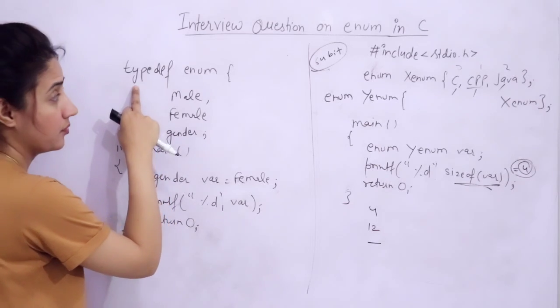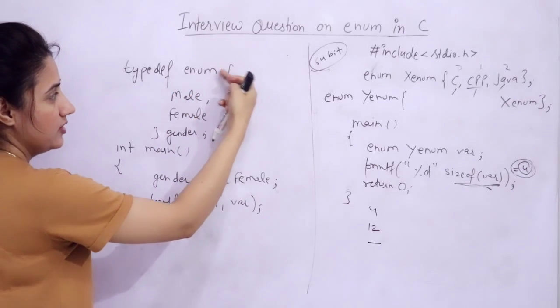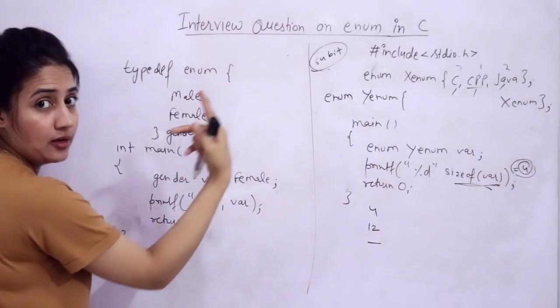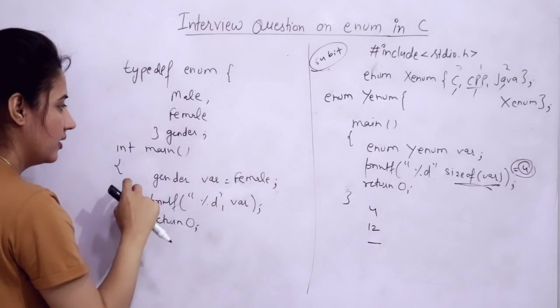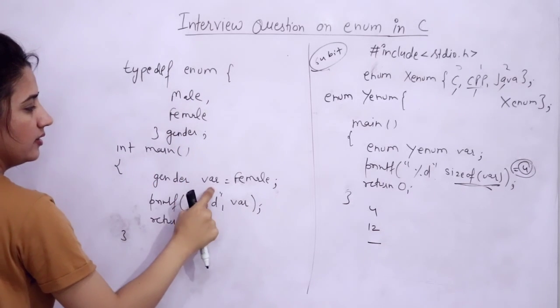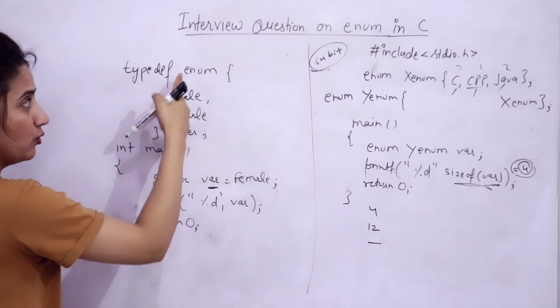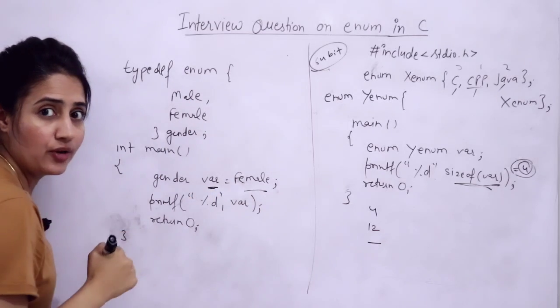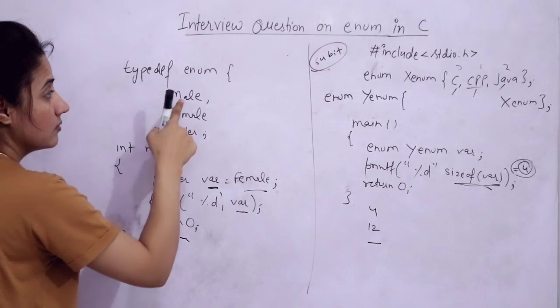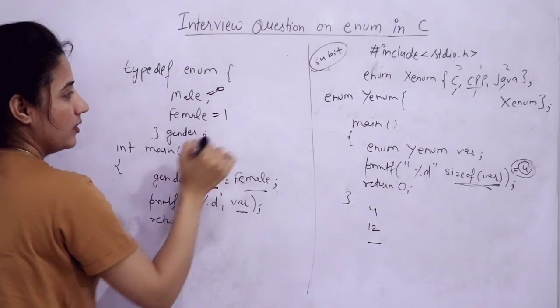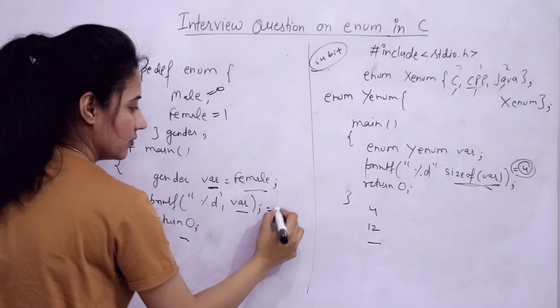Here I am using typedef enum. Within this enum, the values are male and female, only two values, and gender is the name. In main function, gender var - I am declaring a variable of the enum type and assigning the value female and printing var. What output you will get? Male is 0 by default, female is 1, so here you will get 1.